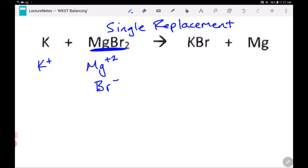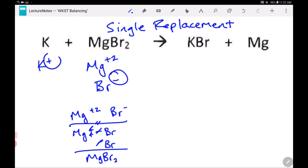This is MgBr2 because we need two bromides in order to cancel out the one magnesium. Bromide has a negative one charge. Potassium has a plus one charge.